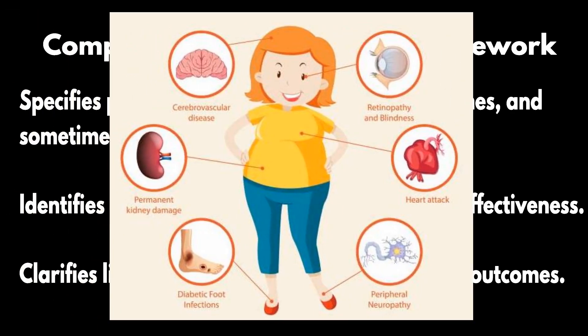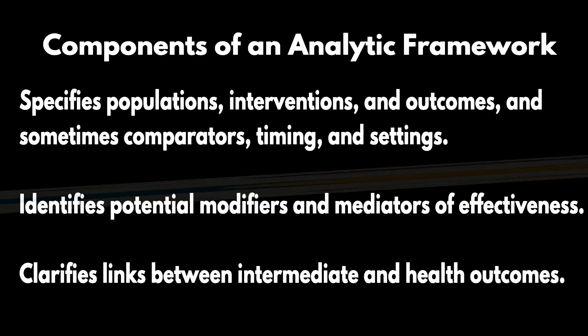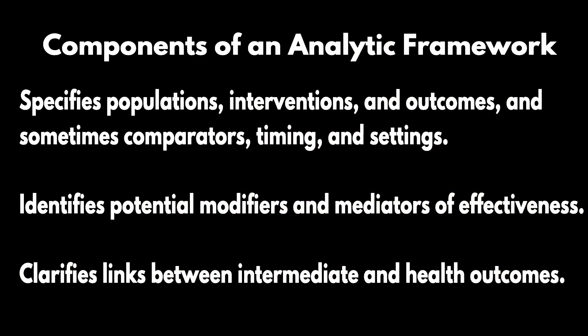Hemoglobin A1c could be considered by some people an interim outcome or a surrogate outcome, and not the actual outcome that you're interested in, which might be death, amputation, neuropathy, or diabetic retinopathy. So it helps you define, when you have an analytic framework, what's an interim outcome along the way and what is the actual final outcome that you're interested in in your study.